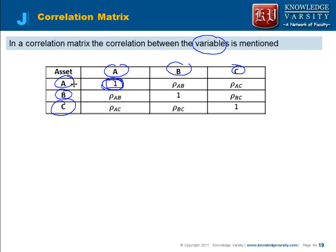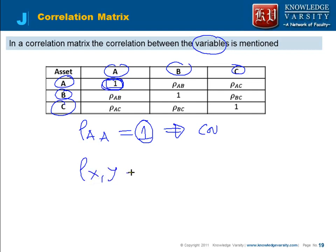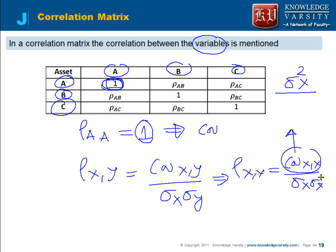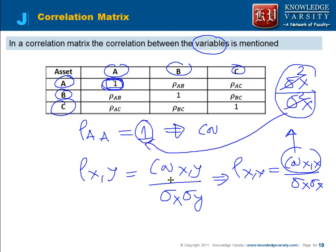This cell represents the correlation between A and A. The correlation between A and itself should be 1. The correlation is written as covariance of X and Y divided by the standard deviation of X times the standard deviation of Y. When it is X and X, it becomes covariance of X with itself — which is the variance of X — divided by variance of X. This gets cancelled, and as a result the correlation equals 1.